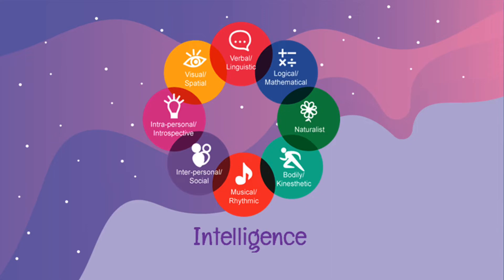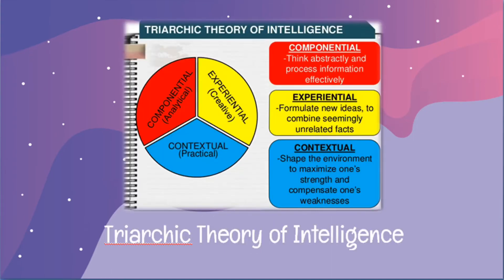Eight and last is intrapersonal intelligence. It is the ability for self-introspection. So if you have the ability to think in a logical way to develop strategy, plans, analysis, and solutions to problems, then you may have this kind of intelligence. Aside from Gardner's multiple intelligences, another theory is proposed by Robert Sternberg called the Triarchic Theory of Intelligence. According to Sternberg, intelligence is defined as the mental activity directed toward purposive adaptation to, selection, and shaping of real-world environments relevant to one's life.